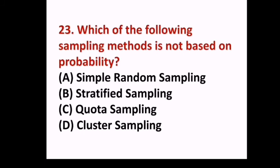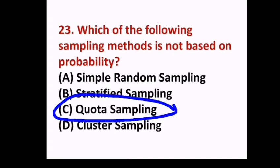Question 23: Which of the following sampling methods is not based on probability? (A) Simple random sampling, (B) stratified sampling, (C) quota sampling, (D) cluster sampling. Answer C, quota sampling.